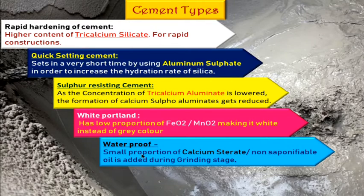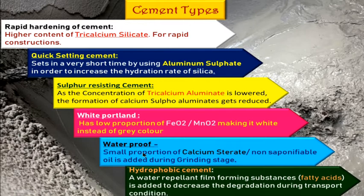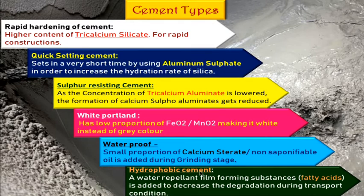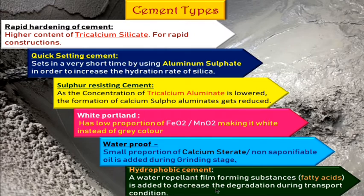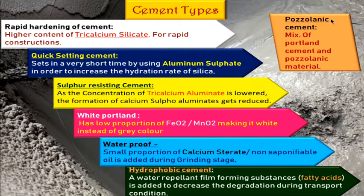Next, waterproof cement. A small portion of calcium stearate or non-saponifiable oil is added during the grinding stage to form a thin film that arrests water. This is also called hydrophobic cement — water-repellent film-forming substances like fatty acids (e.g., oleic acid and stearic acid) are added. This decreases degradation during transport conditions where consistent temperature cannot be expected. Pozzolanic cement adds pozzolanic materials like brick powder and fly ash to Portland cement to make a paste and decrease the water-to-cement ratio.